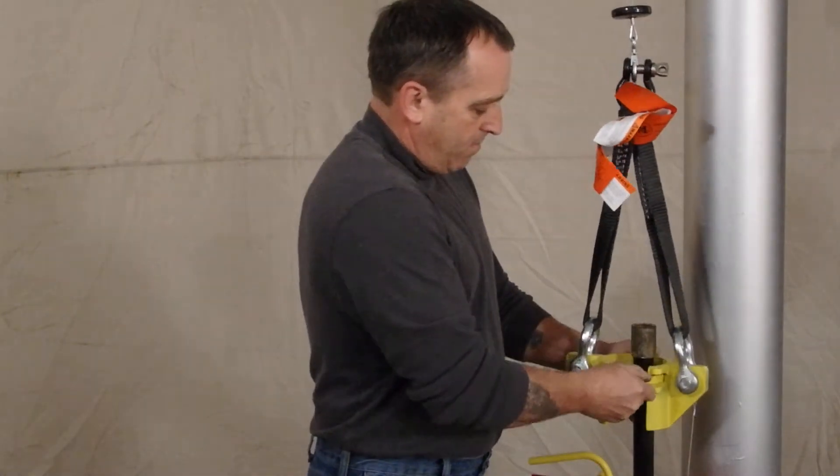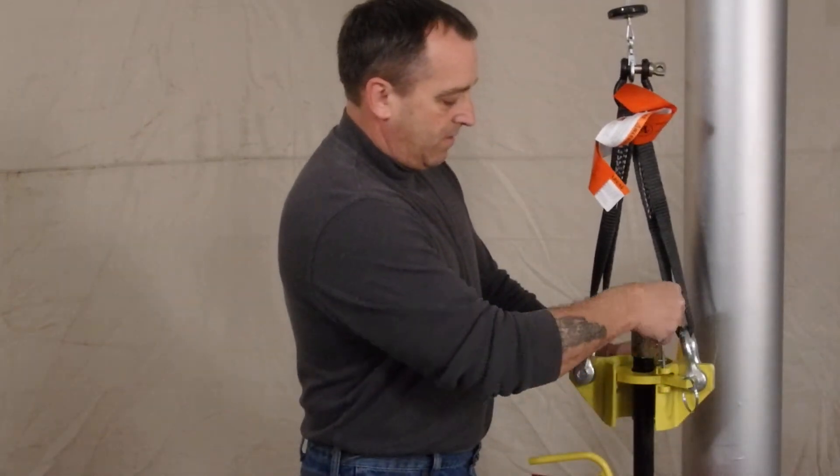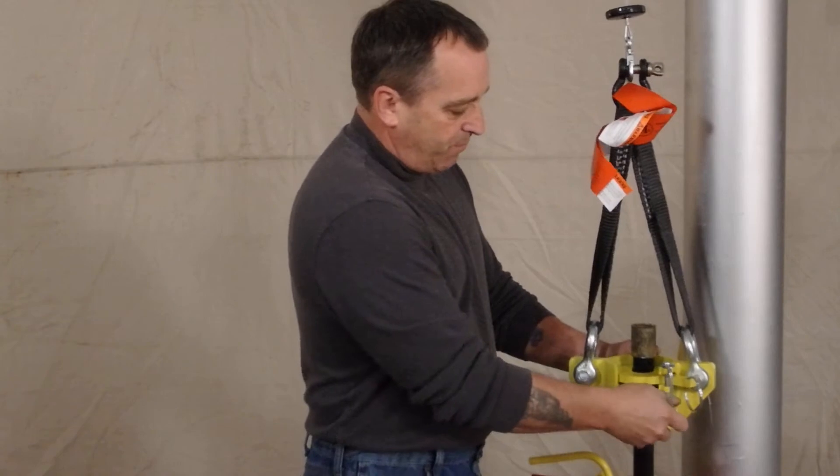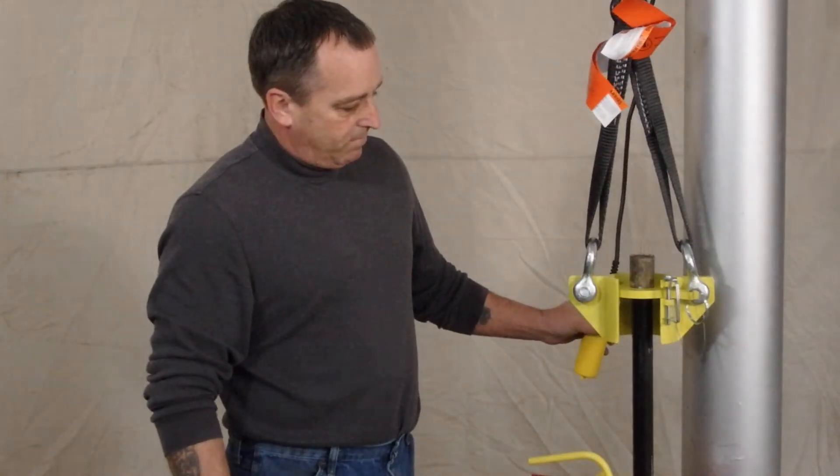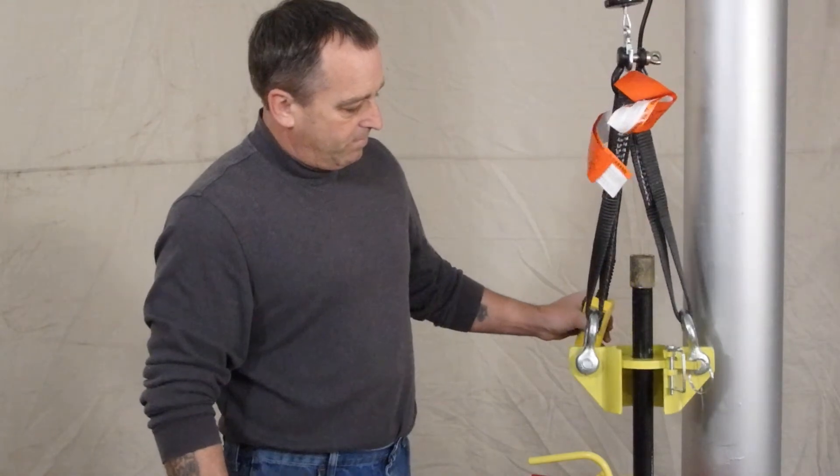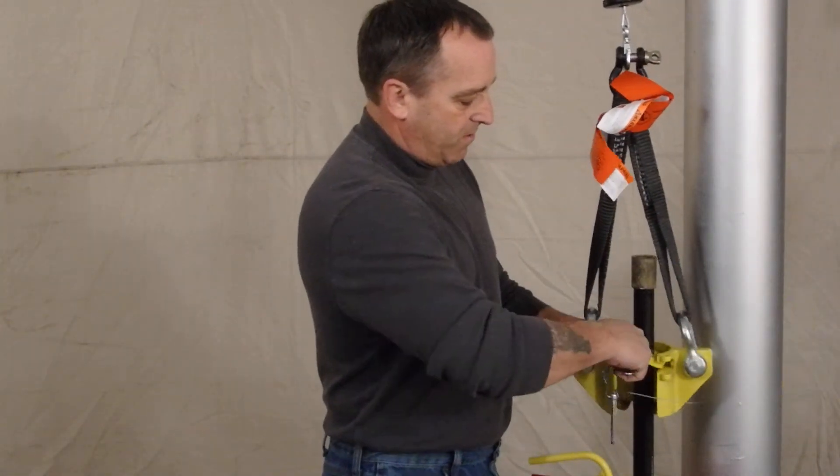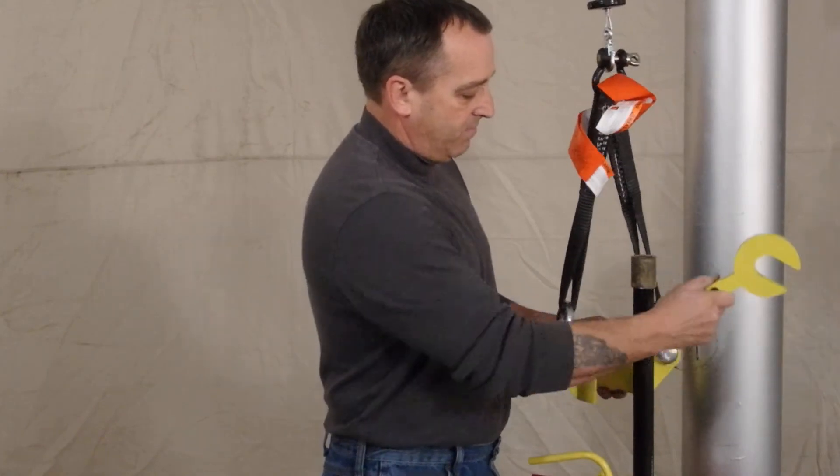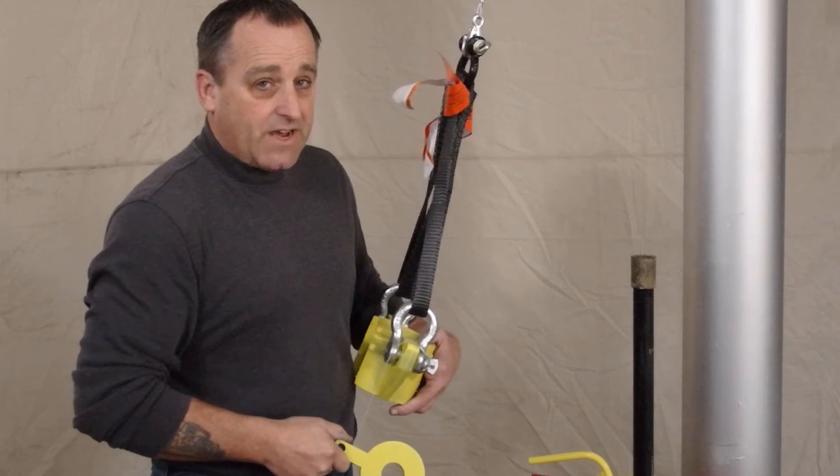put the die in, secure it with the safety pin, take the safety pin out, take your die out, remove it. It's as simple as that.